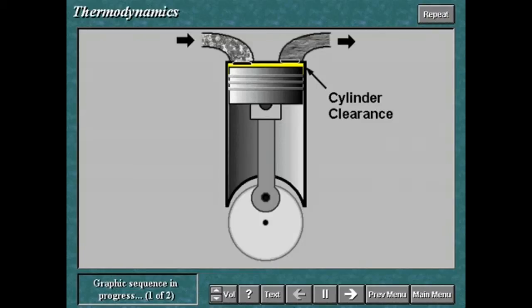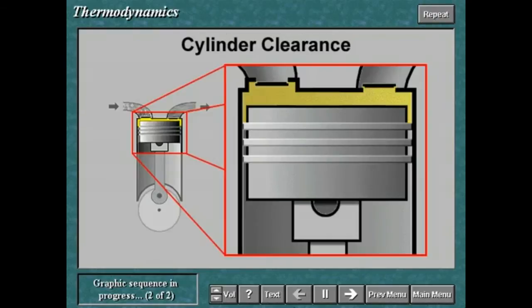This volume is called the cylinder clearance. The cylinder clearance consists of the volume between the cylinder head and the piston at the end of the stroke, the volume between the cylinder walls and the valves, and the volume due to the difference between the diameter of the piston and the diameter of the cylinder.